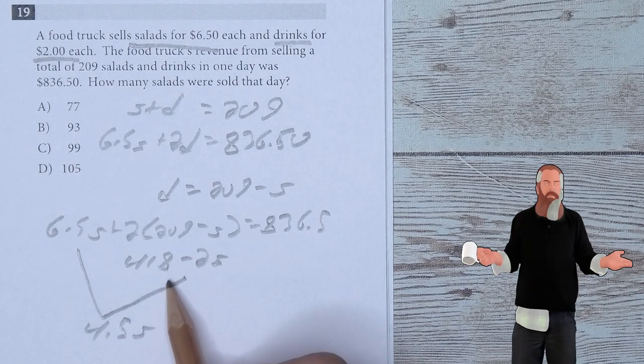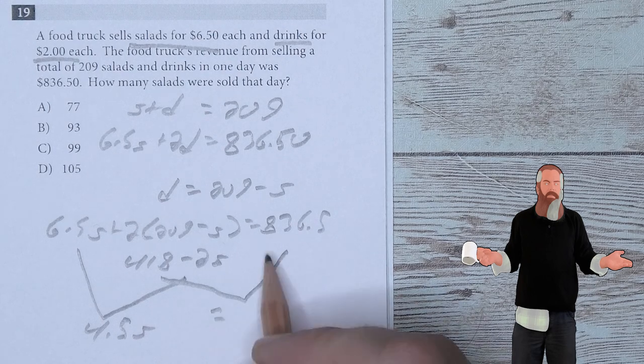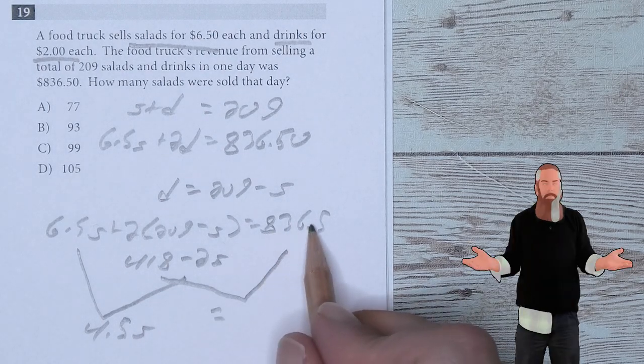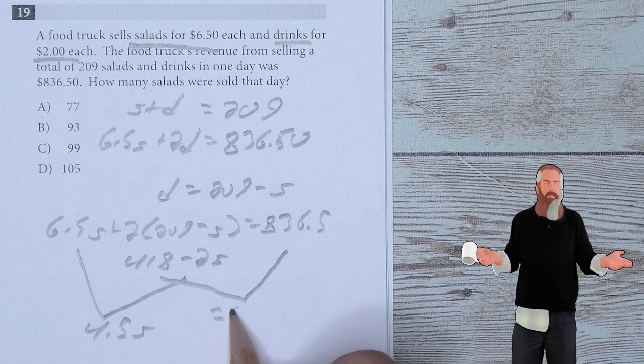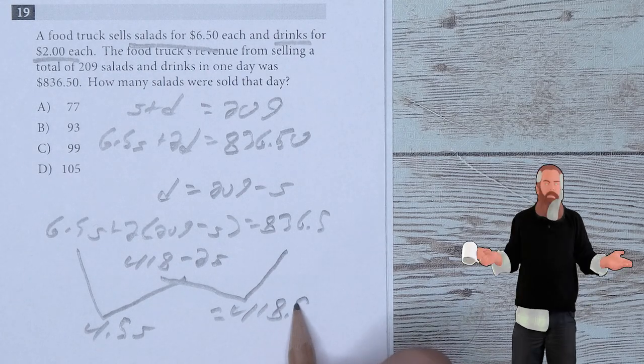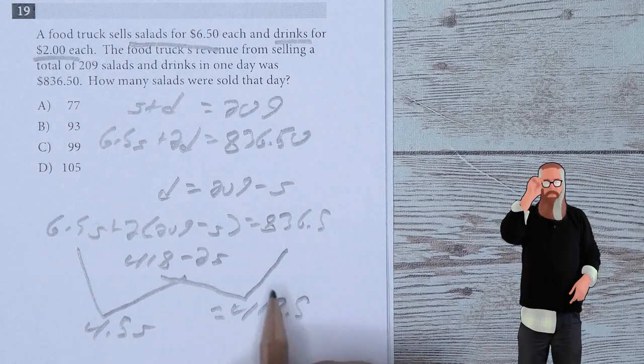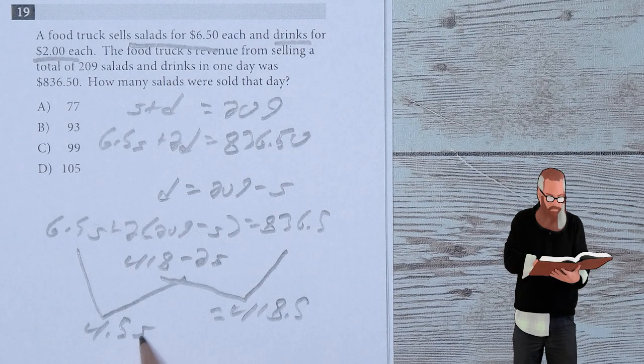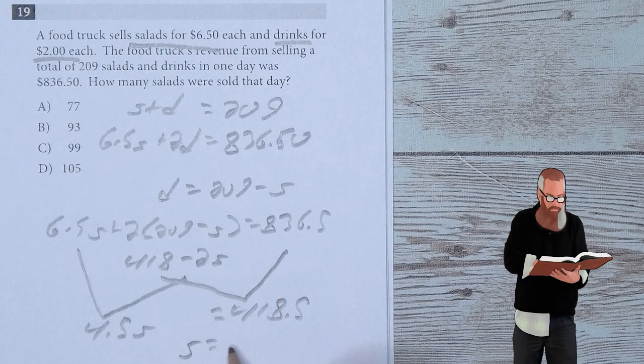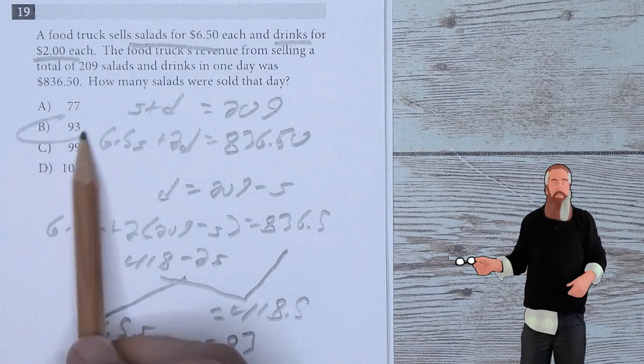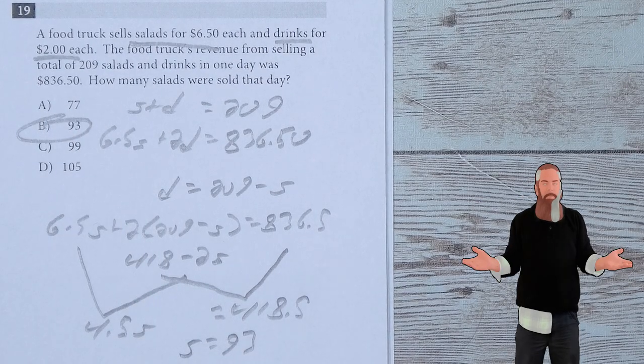Distributing gives me 418 minus 2S, which means I can combine like terms to say 4.5S. Subtracting 418 from 836.5 gives me 418.5. Divide both sides by 4.5 means that S is equal to 93. 93 is B, so there's the answer.